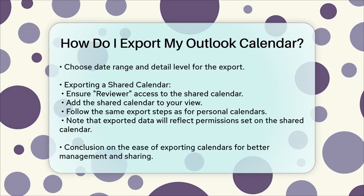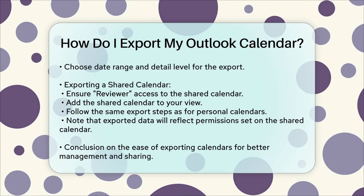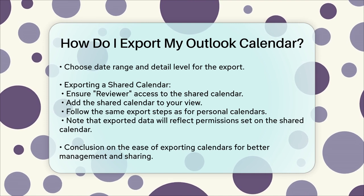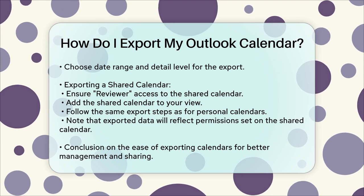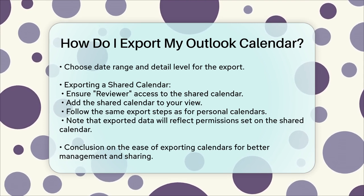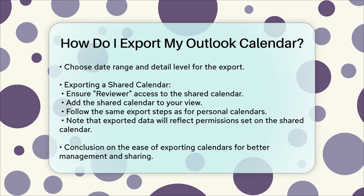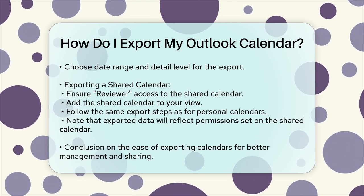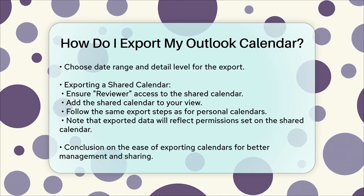Exporting a Shared Calendar: if you're working with a shared calendar, the process is similar but requires a few extra steps. First, ensure you have at least reviewer access to the shared calendar. In Outlook, click on the calendar in the bottom left corner, right-click on the shared calendar you want to export, and select Add Calendar from Address Book. Search for the shared calendar and click OK to add it to your view. Then go to the File menu, select Open and Export, and choose the Import/Export option. Follow the same steps as before to export the calendar to a file, such as a CSV file or Excel file.